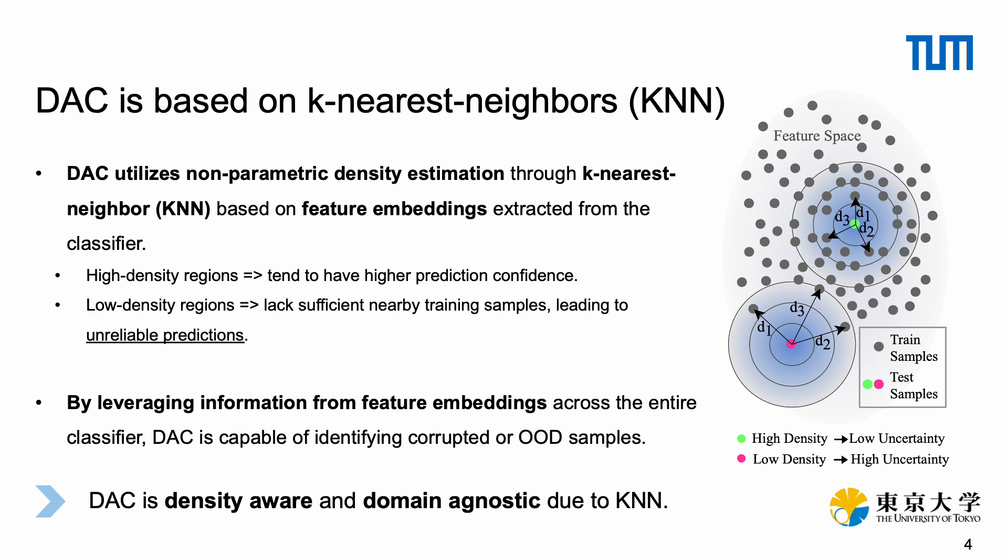For the latter case, the network has seen very few, if any, training samples in the neighborhood of the respective test sample in feature space, and is thus not able to provide reliable predictions for those samples. Leveraging this information about density through a proxy can result in better calibration.